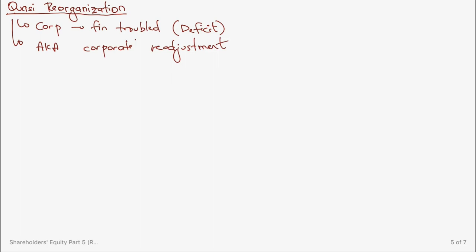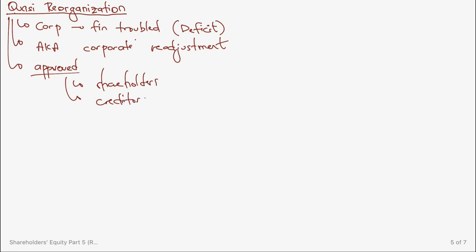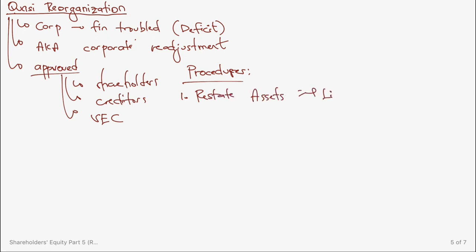The procedures for quasi-reorganization are: Number 1, restate assets and liabilities to conform with fair value. Number 2, reflect all adjustments in the retained earnings account. Number 3, if there is still a deficit after the corporate re-adjustment, eliminate it either through recapitalization — by debiting share premium and crediting retained earnings — or through revaluation, by debiting revaluation surplus and crediting retained earnings.